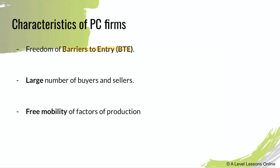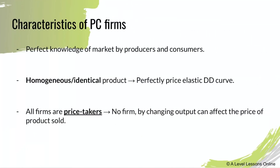There's a large number of buyers and sellers, and free mobility of factors of production. PC firms are essentially the most ideal market structure — in fact, it doesn't even exist in reality because it's too perfect. There's also perfect knowledge of the market by both producers and consumers, which never happens in the real world where imperfect knowledge always prevails.